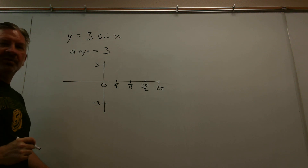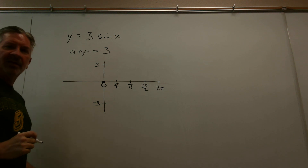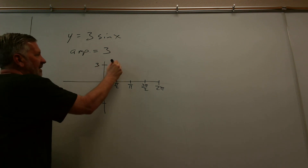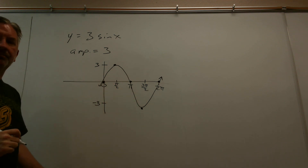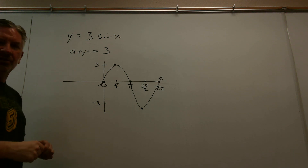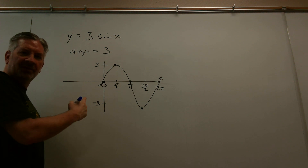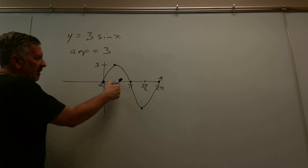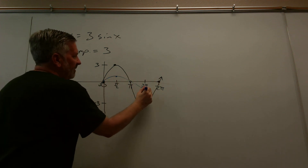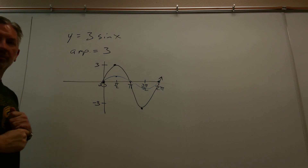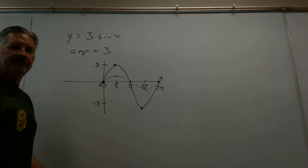Ask yourself what the original sine graph does on the y-axis: it crosses at (0, 0), and as we head to the right the graph goes up — so we have a high, a middle, a low, and a middle. That's the graph of y equals 3 sine x. The original sine graph crosses at one and minus one, so you can see that multiplying by three did a vertical stretch — it changed the amplitude from one on the original graph to three on this one.